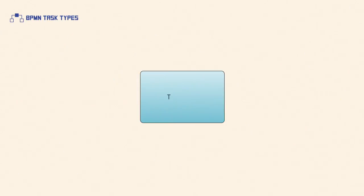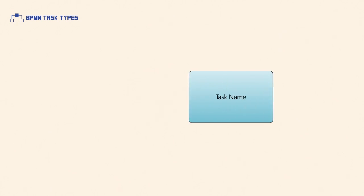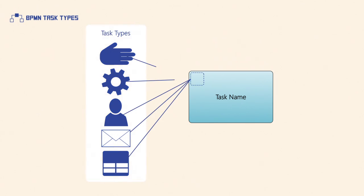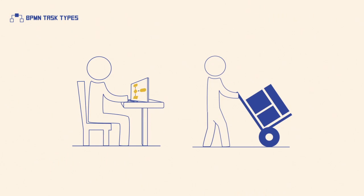A task is the most fundamental business process element since it defines a unit of work. BPMN 2.0 defines several types of tasks, which are graphically annotated with different symbols positioned on the top left corner of a task element. These define the various inherent behaviours that a task might possess.